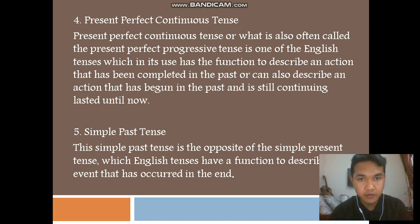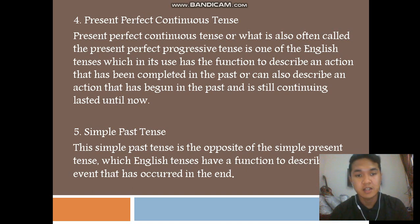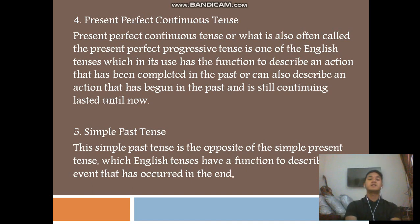Number four: present perfect continuous tense, or what is also often called the present perfect progressive tense. It is one of the English tenses which has the function to describe an action that has been completed in the past, or can also describe an action that has begun in the past and is still continuing until now.